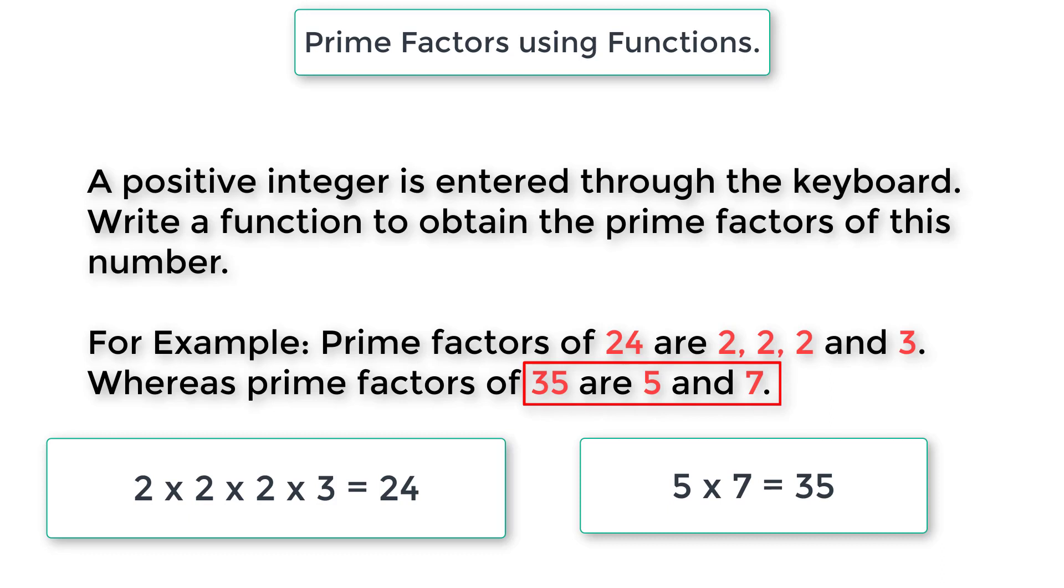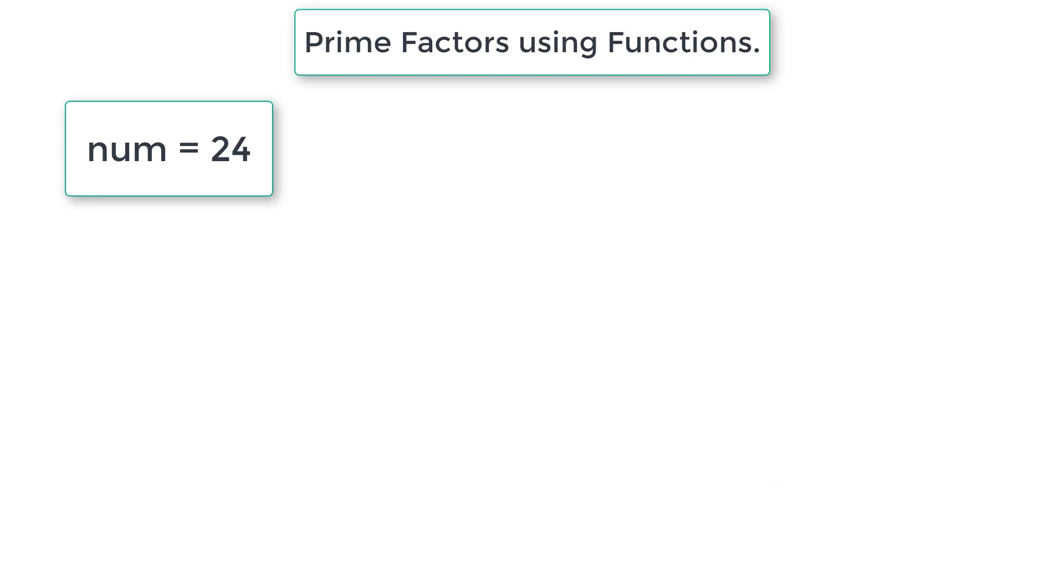If we observe closely, 24 as well as 35 are not even prime numbers, but their factors are all prime numbers. That is 2, 3, 5 and 7 are all prime numbers. Let me take an example. Let us take this number 24 itself.